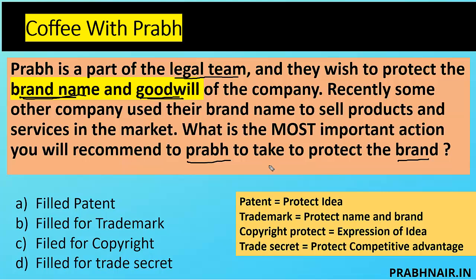When talking about intellectual property, it protects four types of property. First is patent, which is used to protect ideas. Second is trademark, which is used to protect the name and brand. Third is copyright, which protects the expression of idea rather than the ideas themselves. Fourth is trade secret, which protects competitive advantage.